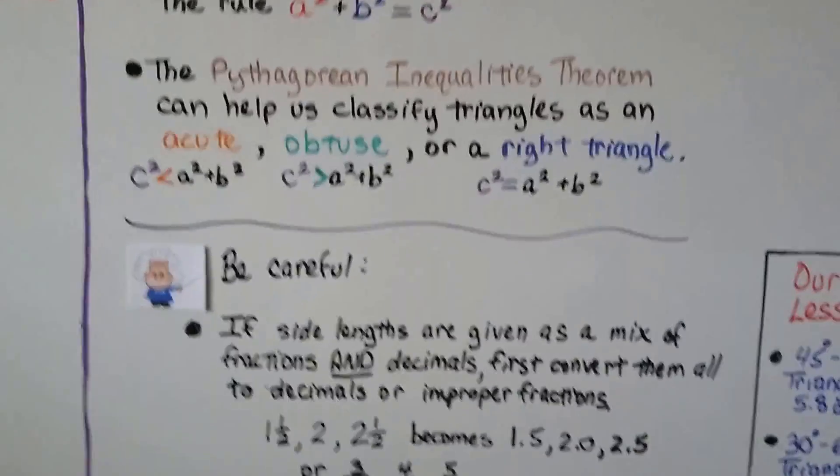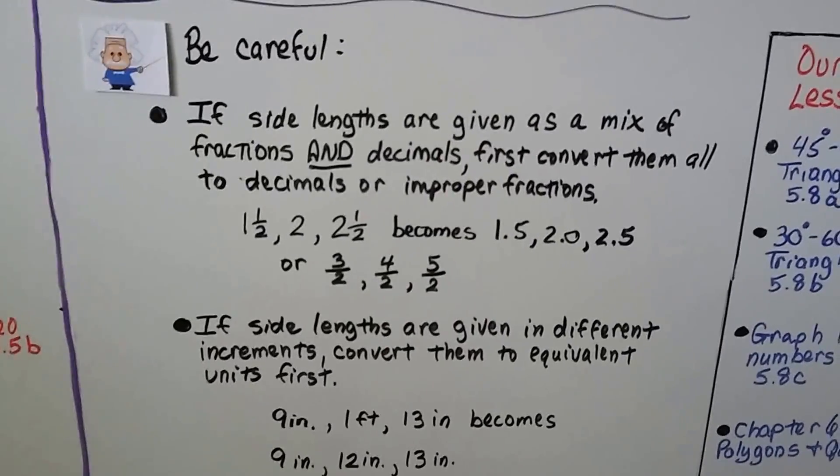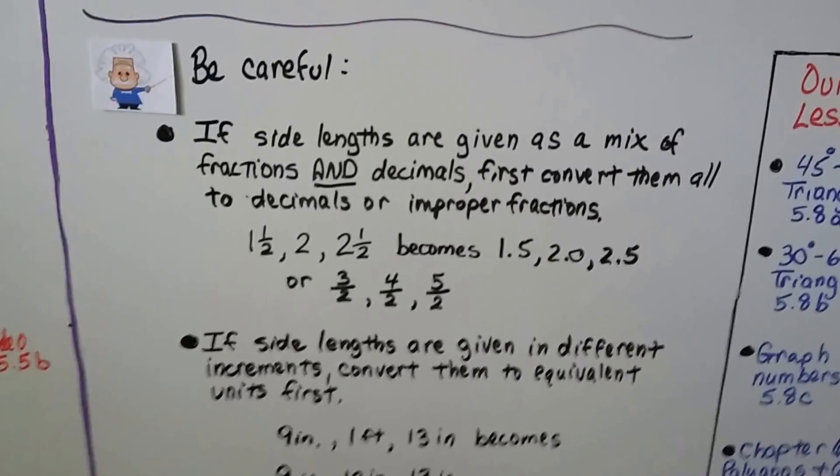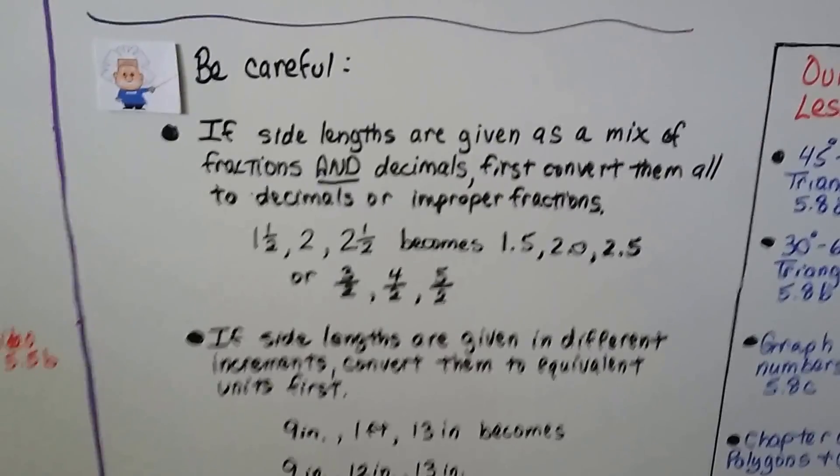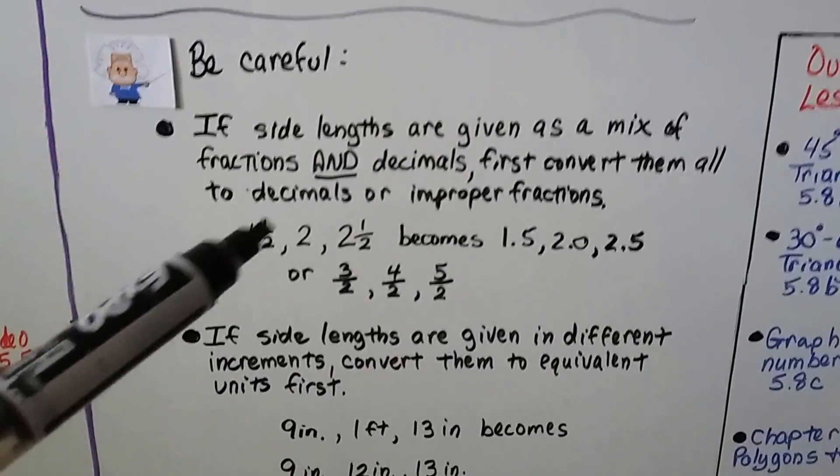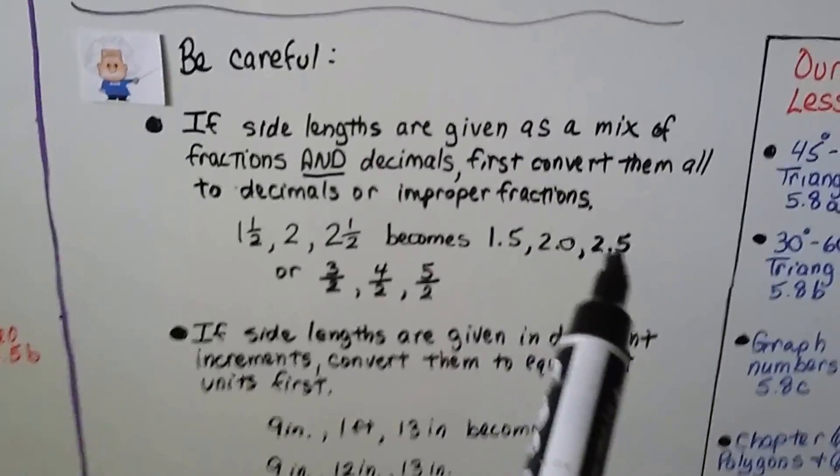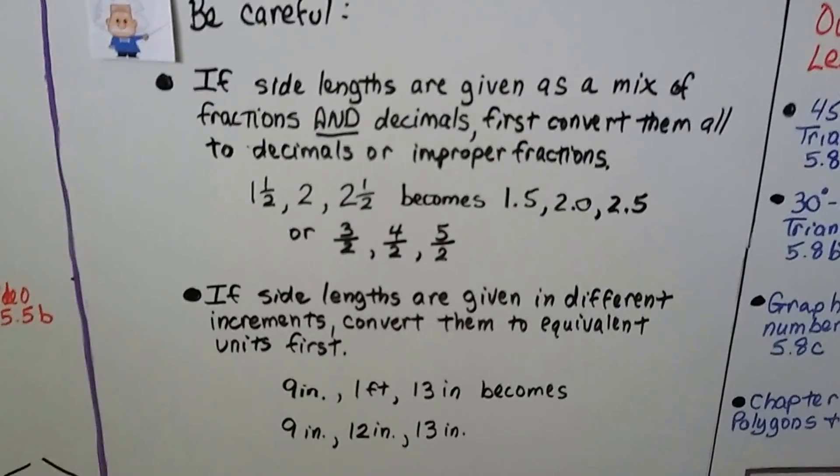Be careful as you do problems. If side lengths are given as a mix of fractions and decimals or fractions and mixed numbers, first convert them all to decimals or improper fractions. For example, if you have 1½, 2, and 2½, make them 1.5, 2.0, and 2.5, or as improper fractions: 3/2, 4/2, 5/2.